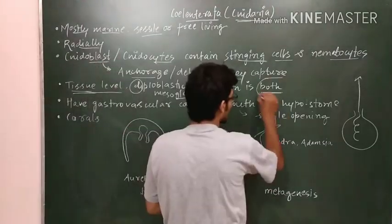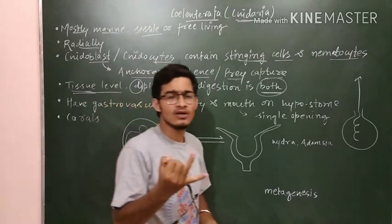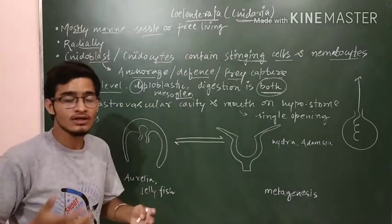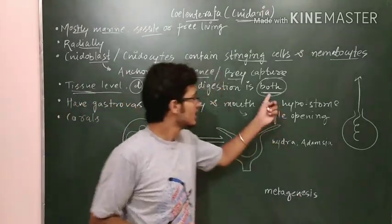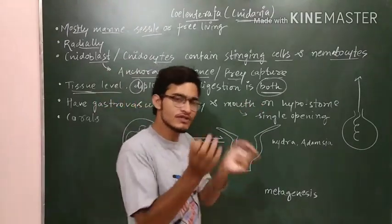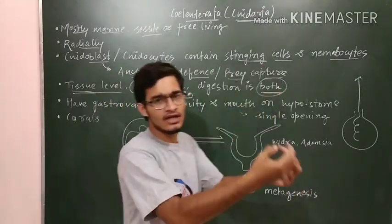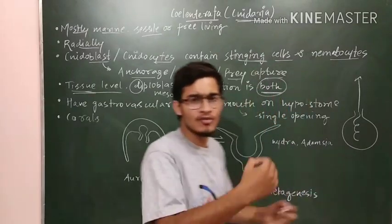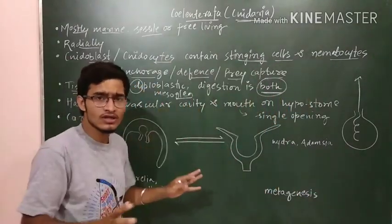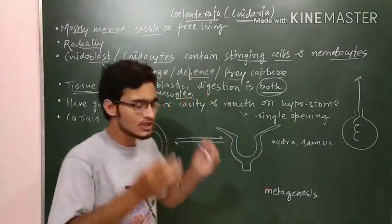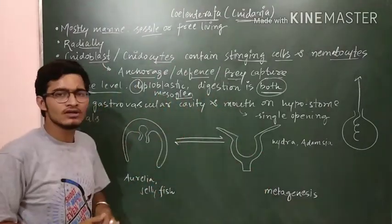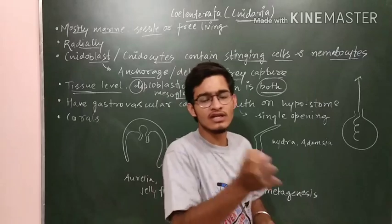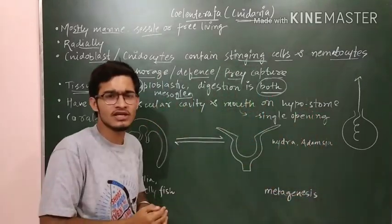The digestion in Coelenterata is both intracellular and extracellular. In Porifera we had only intracellular digestion. In Coelenterata, digestion can occur within the cell (intracellular) and also outside the cell (extracellular). A trick to memorize which phylums have intracellular or extracellular digestion will be posted in the next video.